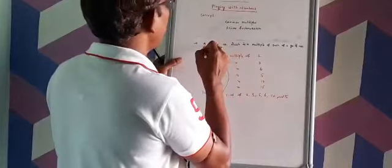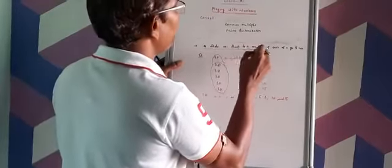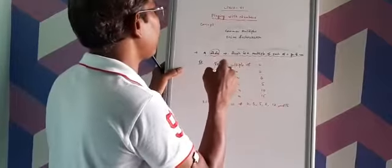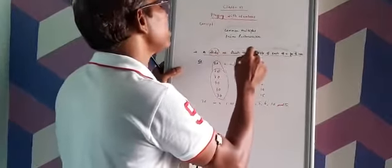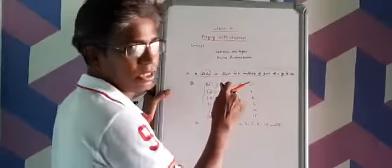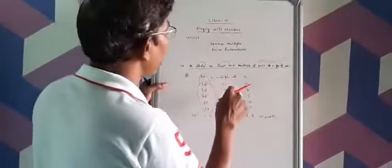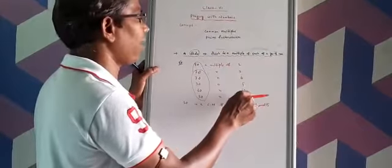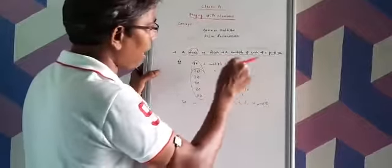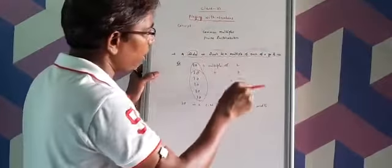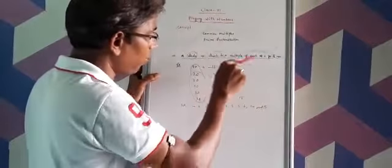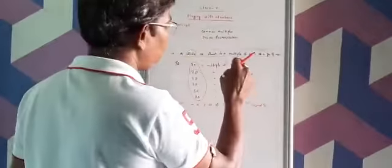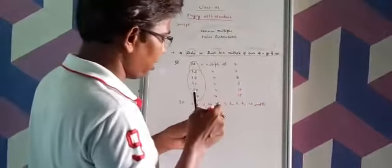Now we discuss the definition of common multiples with this example. A whole number — in this case 30 — which is a multiple of each of the group of numbers. We have taken the group of numbers as 2, 3, 6, 5, 10, and 15. So we can say that this whole number 30 is a common multiple of 2, 3, 5, 6, 10, and 15.